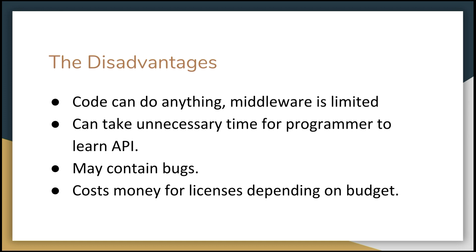It can also sometimes take unnecessary time for a programmer to learn the API. For example, if you're building a racing game needing dynamic audio for car engines revving or a Doppler effect, bearing in mind that middleware is designed for any sort of game - fighting games, RPGs, stealth games - it might actually be easier and more specific to just build your own audio engine. There can also be bugs, though in my experience with FMOD they update very frequently. And depending on budget, middleware does cost money.